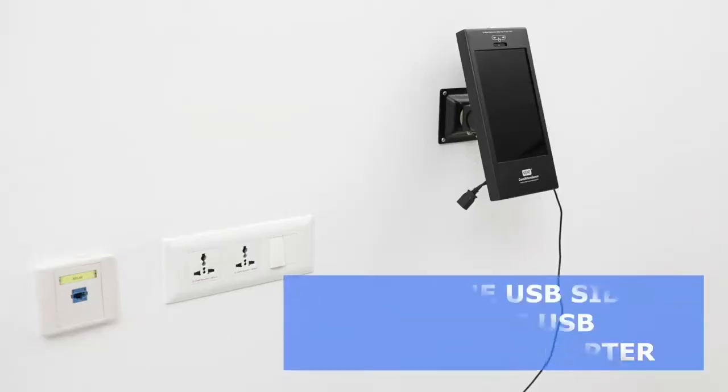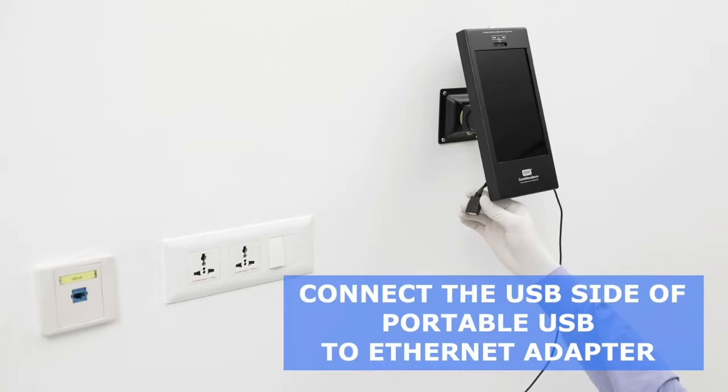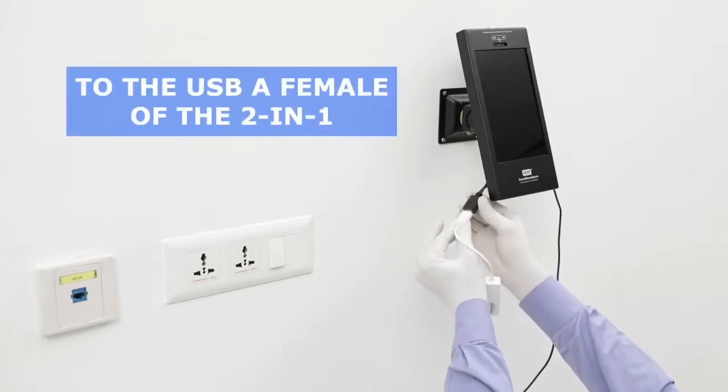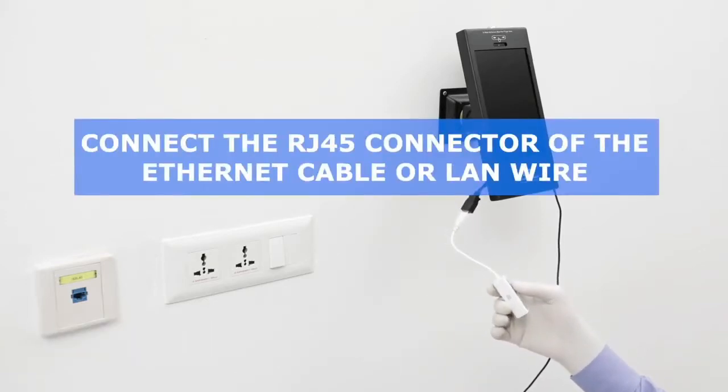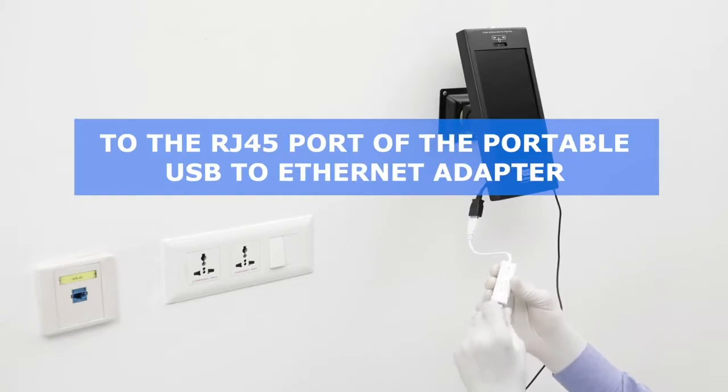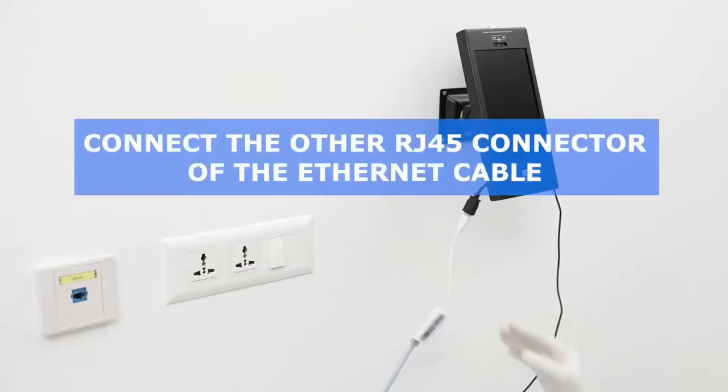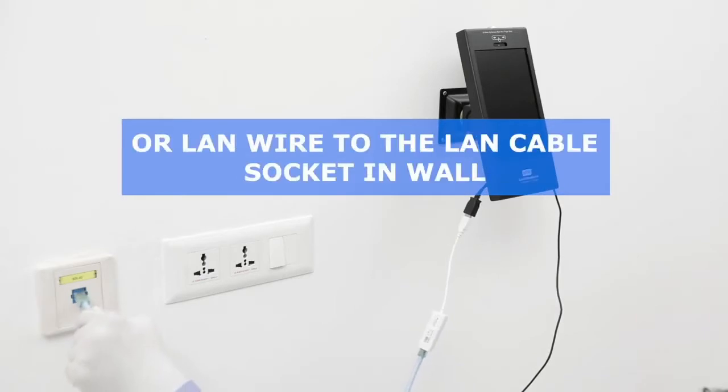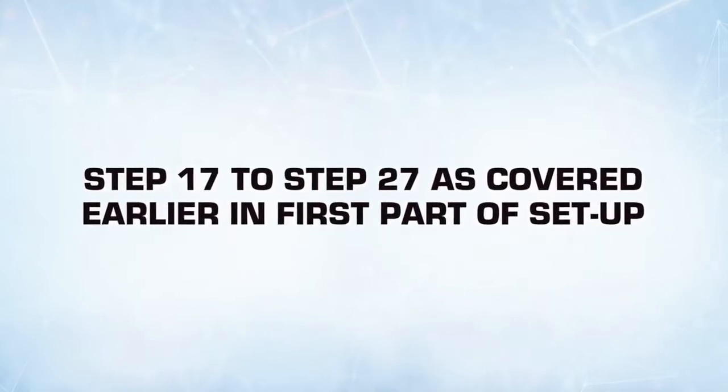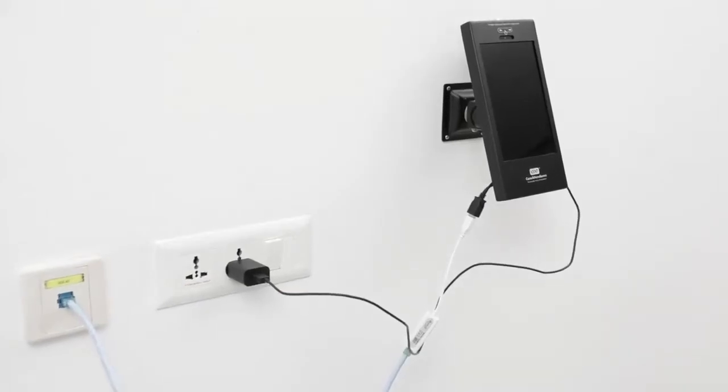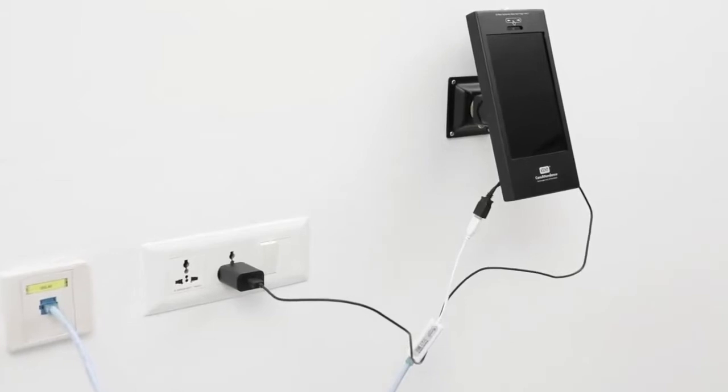Step 7: Connect the USB side of the portable USB to Ethernet adapter to the USB A female of the 2-in-1 micro USB Y splitter cable. Step 8: Connect the RJ45 connector of the Ethernet cable or LAN wire to the RJ45 port of the portable USB to Ethernet adapter. Step 9: Connect the other RJ45 connector of the Ethernet cable or LAN wire to the LAN cable socket in wall. Repeat step 17 to step 27 as covered earlier in the first part of the setup. Now, we have completed the installation of Kent CAM attendance with LAN connectivity.